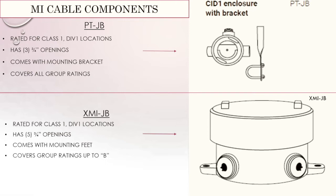The XMI JB is also Class 1 Div 1. It's a little smaller than the PT JB and has five different openings to choose from. It comes with mounting feet, so it doesn't require a separate bracket. However, it does not cover Group A in Class 1 Div 1 — it covers the remaining groups. Those are the MI cable components we handle.